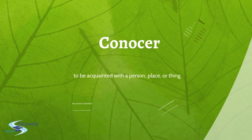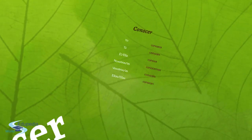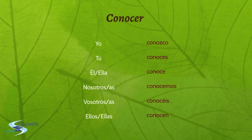Now let's take a look at conocer, which is simpler. It's way more simple than saber. Conocer means to be acquainted with a person, a place, or a thing. Like saber, the conjugation is only irregular for the first person singular.